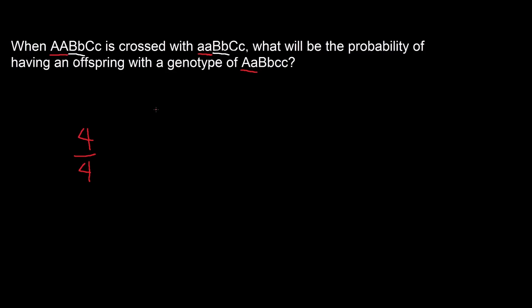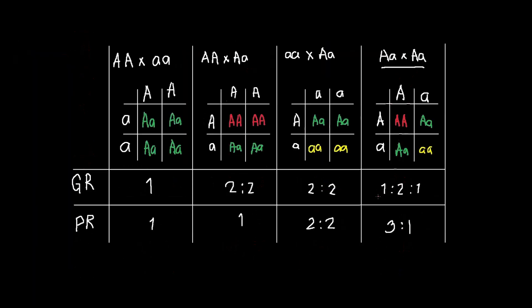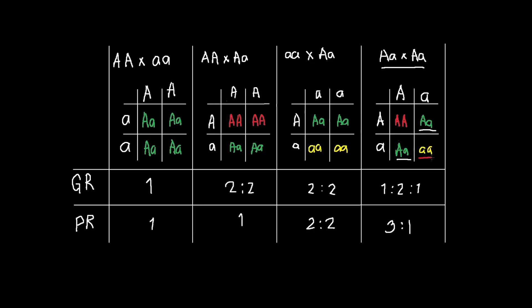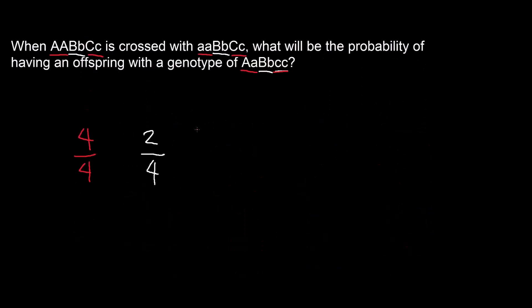Now for trait B: a cross between two heterozygotes, and we are looking for a heterozygous offspring. From what we know, a cross between two heterozygotes gives a 1:2:1 ratio, where two out of four are heterozygous, so we put two over four, or 50%. For trait C, also a cross between two heterozygotes, but now we are looking for a homozygous recessive offspring. That would be one out of four chances, so we put one over four, or 25%.